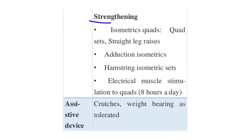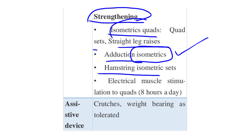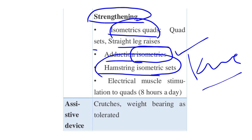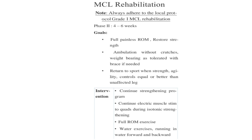Strengthening in Phase 1 includes isometrics: quad sets, straight leg raises (SLR), adduction isometrics, and hamstring isometric sets. Electrical muscle stimulation (EMS) to the quads is applied for up to eight hours a day. Assistive devices such as crutches are used with weight bearing as tolerated by the patient.